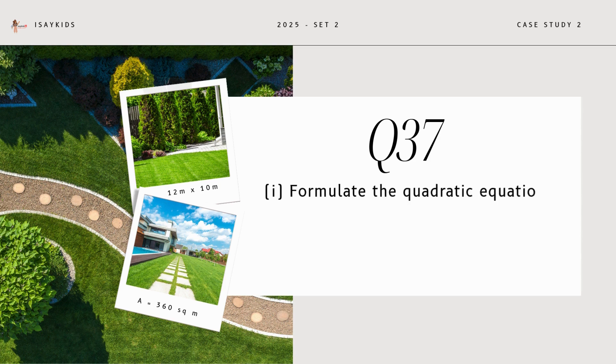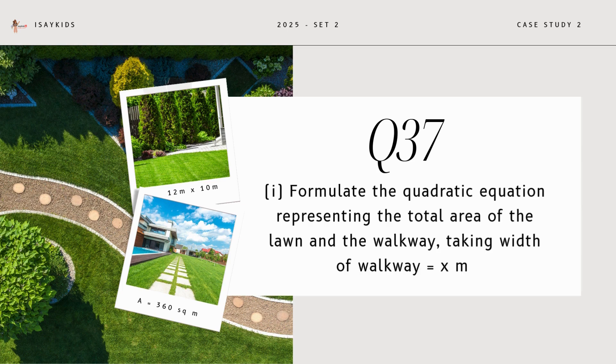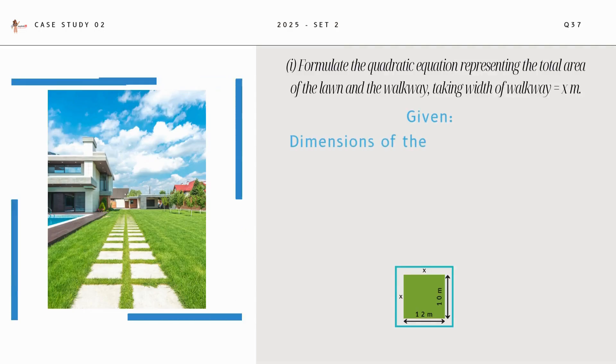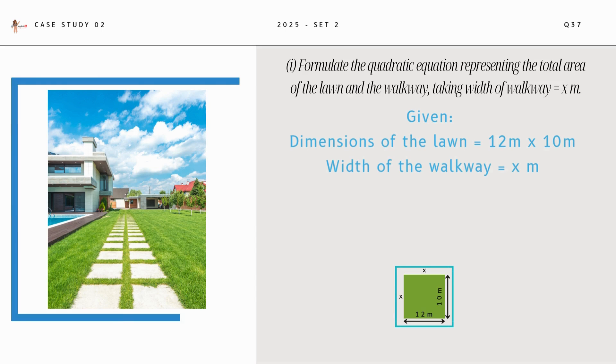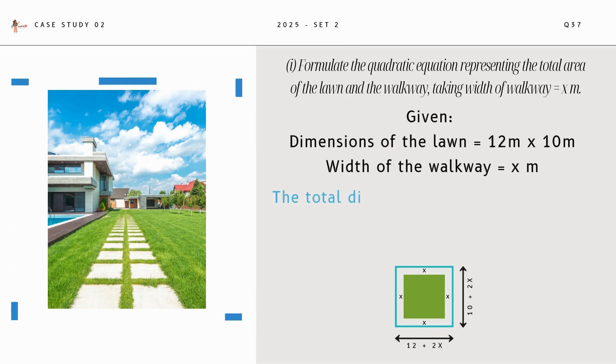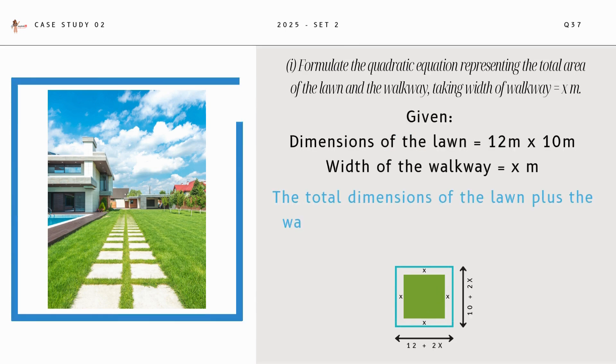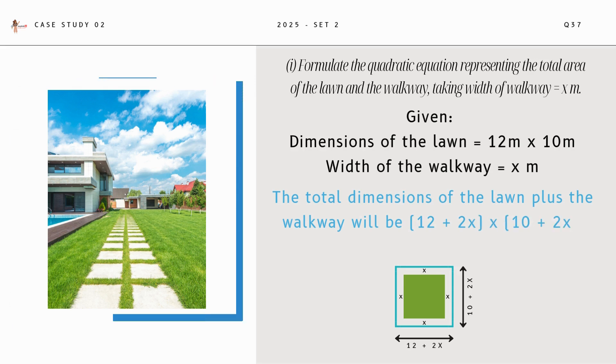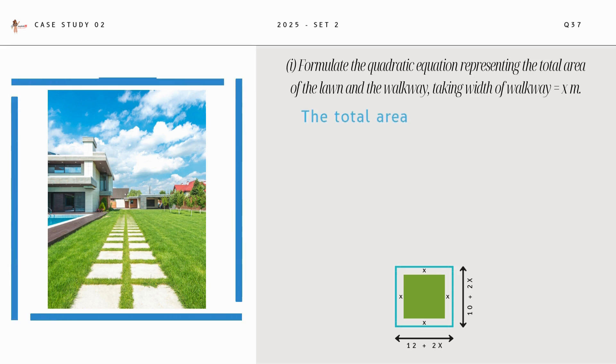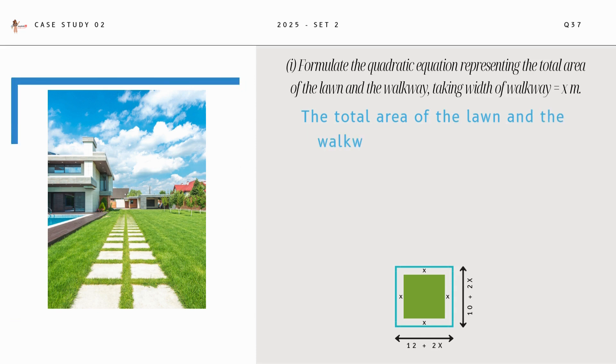Formulate the quadratic equation representing the total area of the lawn and the walkway, taking width of walkway as x meters. Now, this is given. Total dimensions of the lawn plus the walkway will be 12 plus 2x times 10 plus 2x. Total area of the lawn and walkway can be expressed as (12 + 2x)(10 + 2x) equal to 360.